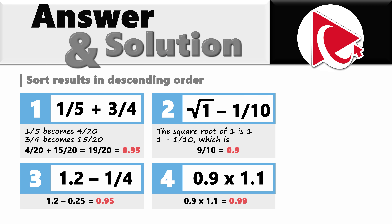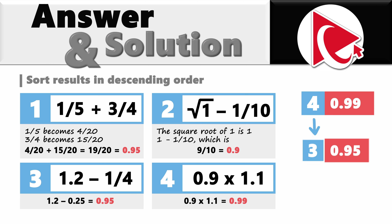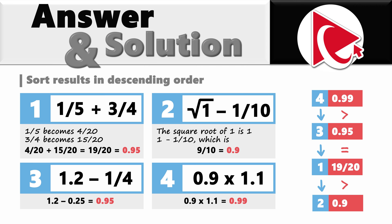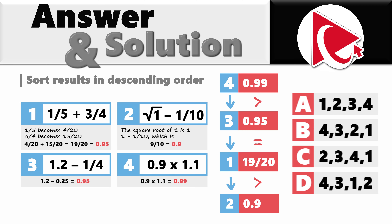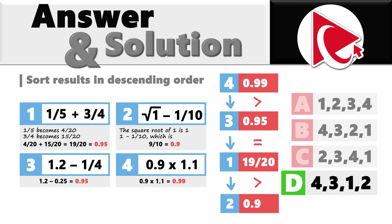Now it's time to do the sorting. Our highest value is 0.99, which is the fourth expression. Then we have two expressions with the same value: expression 3 (0.95) equals the result of expression 1 (19/20). Our smallest value is the result of expression 2, which is 0.9. What's especially interesting is that even though results of expressions 3 and 1 are the same, the correct answer choice is only 1, which is Choice D: 4, 3, 1, 2.